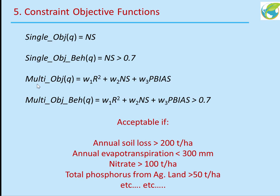For our various objective functions — single objective, single objective behavioral, multiple objective, and multiple objective behavioral — you can put a further constraint, accepting a simulation only if, for example, the annual soil loss is larger than 200 tons per hectare, or annual evapotranspiration is less than 300 millimeters, or nitrate is greater than 100 tons per hectare, or total phosphorus from agricultural land is larger than 50 tons per hectare. You could formulate hundreds of such constraints if you have the information.